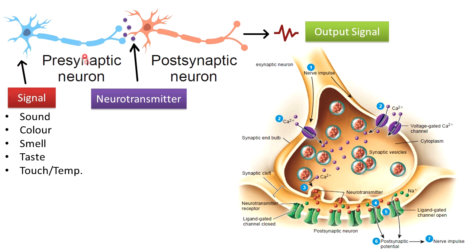The pre-synaptic neuron is activated by various signals — any sound, any color, smell, taste, touch, or temperature. These are different types of neurons present in our different sensory organs. After activation, the neuron generates an output signal that is taken up by either the central nervous system or the spinal cord.